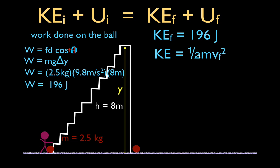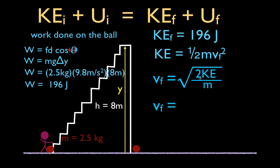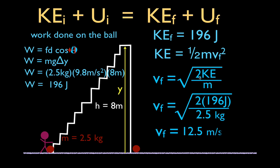We're going to use our kinetic energy equation and solve for final velocity. First, multiply each side by two — that gets rid of the one-half, giving us 2·KE. Then divide each side by m, moving mass to the other side. Then take the square root of both sides. We end up with: final velocity equals the square root of (2 times kinetic energy divided by mass). Plugging in values: square root of (2 × 196 ÷ 2.5 kilograms) gives a final velocity of 12.5 meters per second.